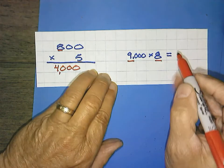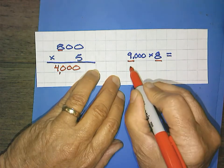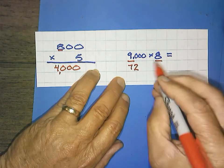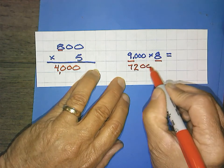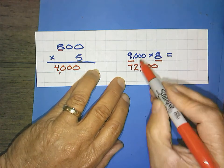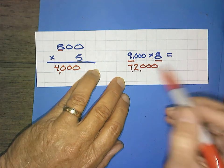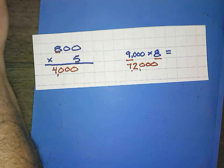9,000 times 8. 9 times 8 is 72. Count your zeros. 1, 2, 3. And write your zeros. 1, 2, 3. So 9,000 times 8 equals 72,000. Okay, thanks, everybody, and we'll see you next time.